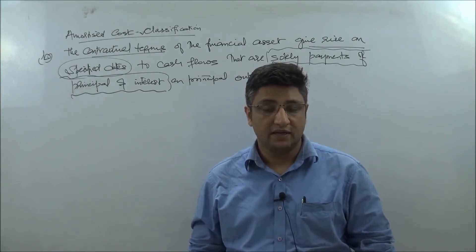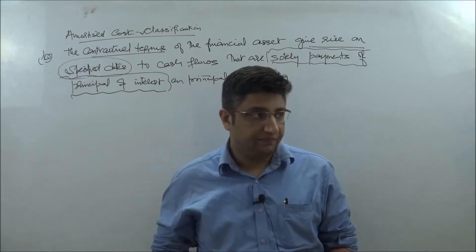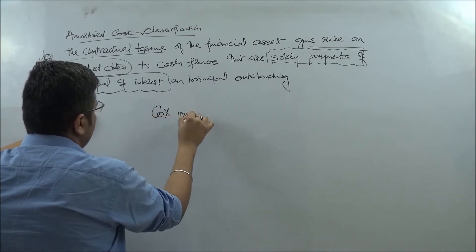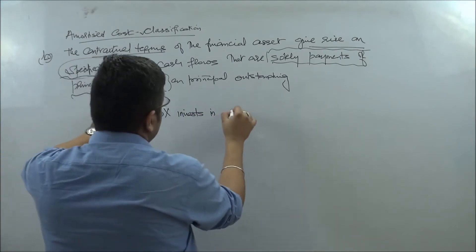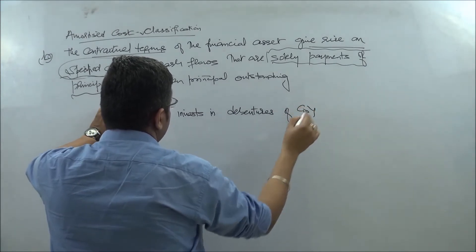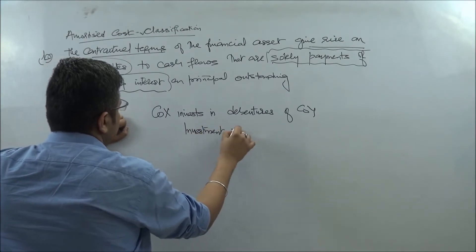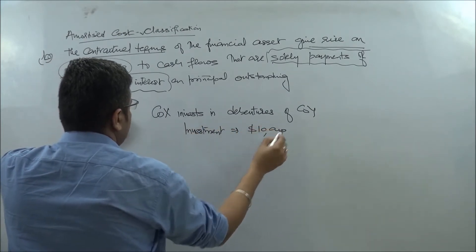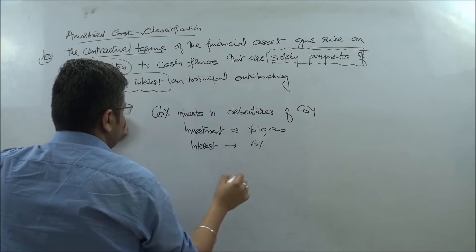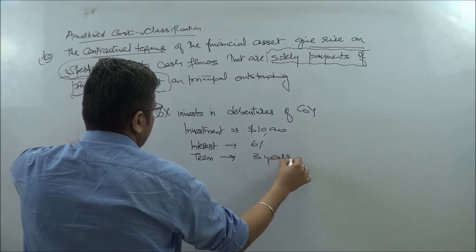In a simplified manner, let me bring some examples. Let us say company X invests in debentures of company Y. The investment is $10,000, the interest rate is 6%, and the duration of the term is three years.